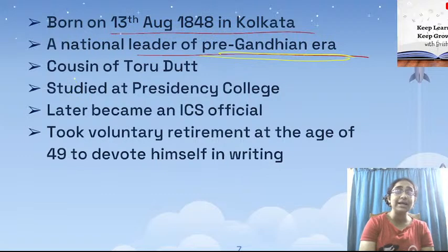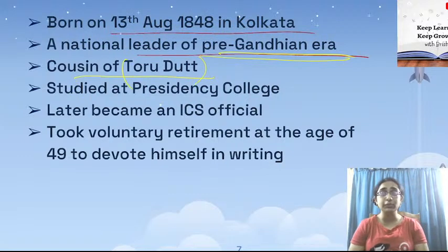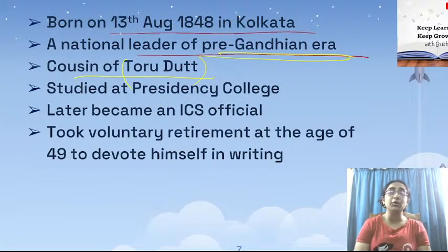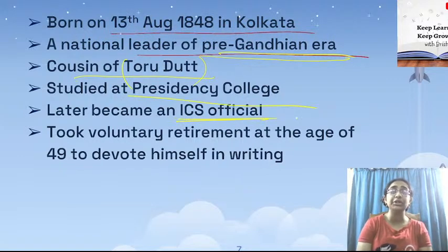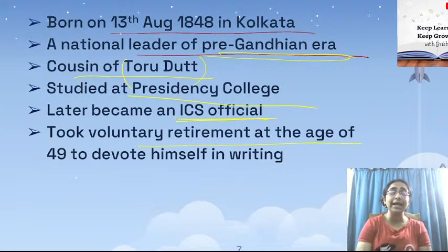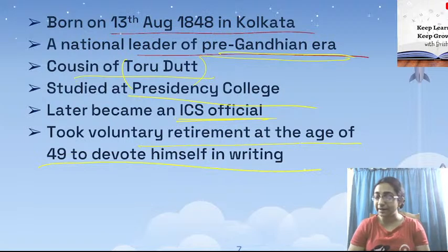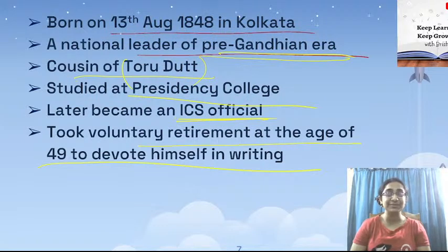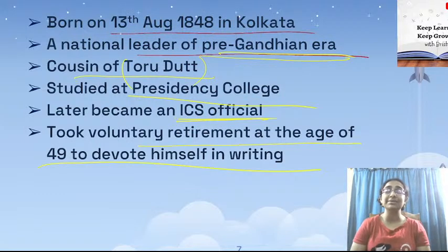He was actually the cousin of Toru Dutt — we will talk about Toru Dutt in the next class. He studied at Presidency College and later became an ICS official. But he took voluntary retirement at the age of 49 to devote himself to writing. He resigned from his job as an ICS officer just to become a writer.